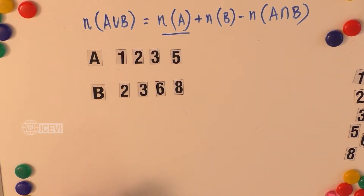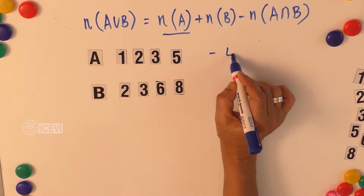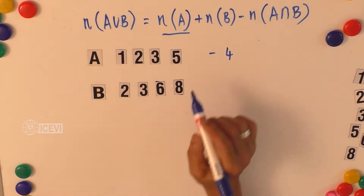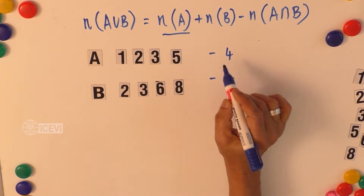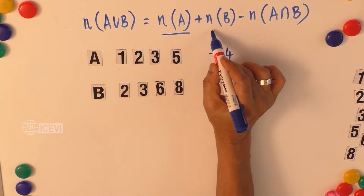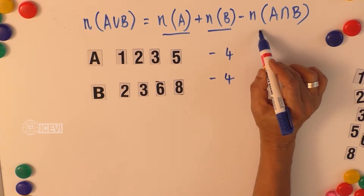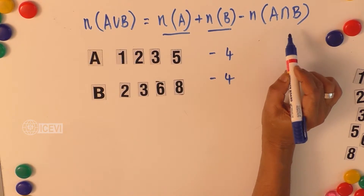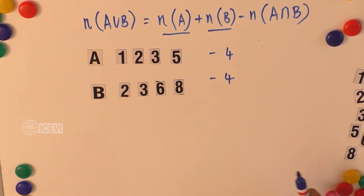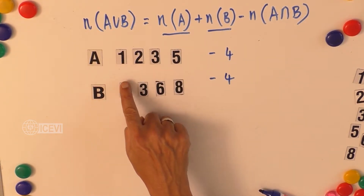We know that n(A), the number of elements in set A, is four, and the number of elements in set B is also four. Now we need to find the number of elements in A intersection B.